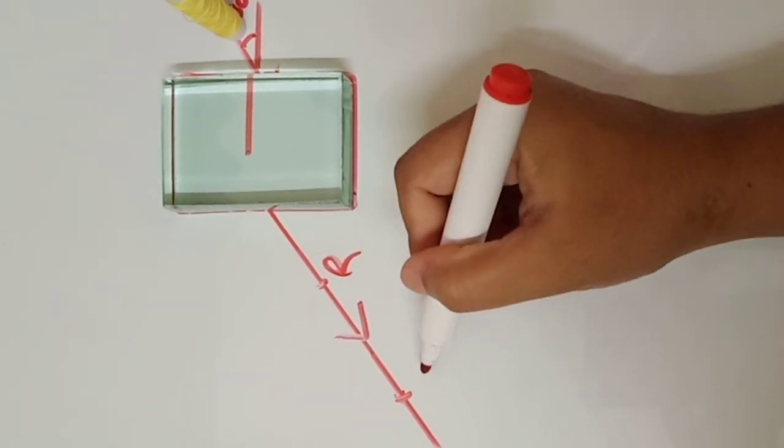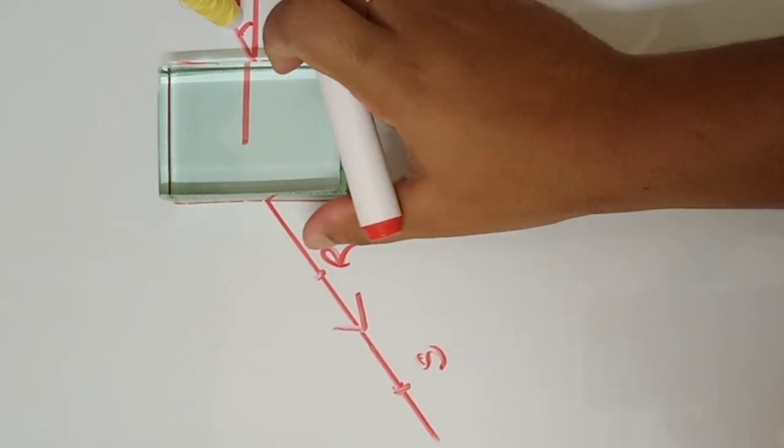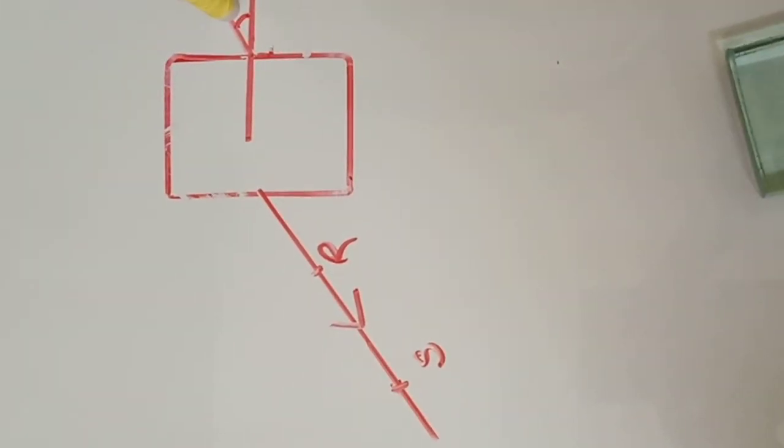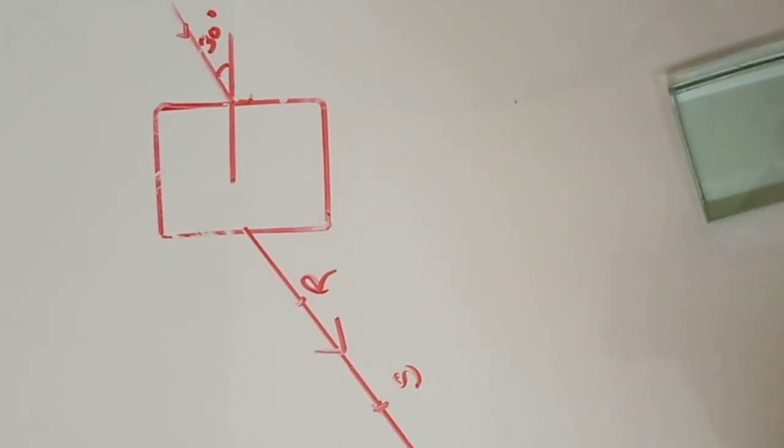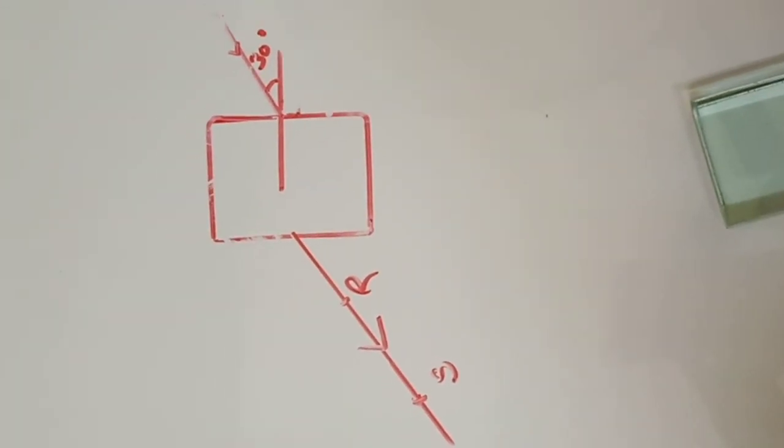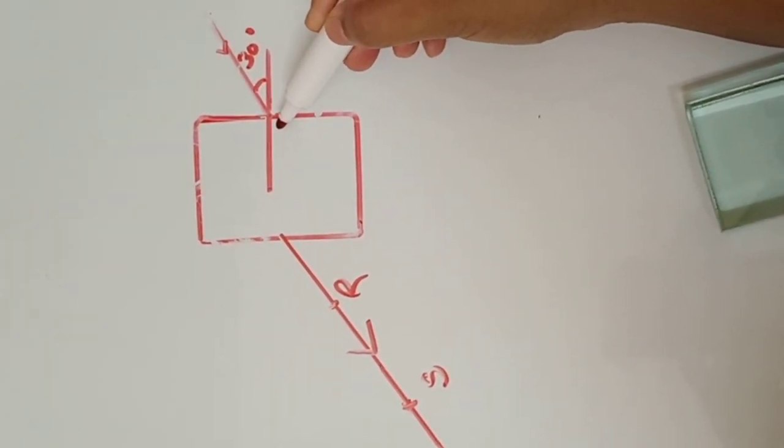Now I will join these points, these points R and S. So what this exactly becomes: this is how light comes out of your glass slab or emerges out of your glass slab. These two points R and S—this becomes your emergent ray. This is how it comes out. Now remove the glass slab and threads.